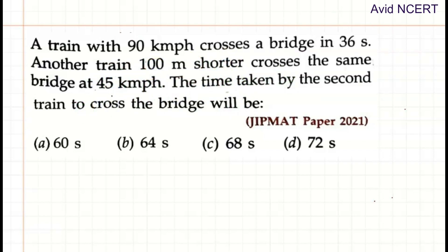So the data we have here is: the speed of train 1, that is S1, is 90 km per hour, and it crosses a bridge in 36 seconds. So time T1 is 36 seconds. Another train is 100 meters shorter, so we don't have the length of this train. So the length, which is the distance, is unknown for train 1. So let it be L1.